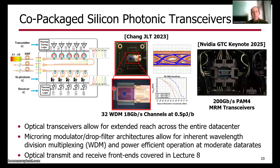Finally, we're going to cover optical transceivers that allow for extended reach across the entire data center. There is currently a lot of excitement around co-packaged silicon photonic transceivers based on micro-ring modulators and drop filters that allow for inherent wavelength division multiplexing and power-efficient operation at moderate data rates, such as this 32-channel WDM implementation where each channel operates at 18 gigabits per second with a front-end power of 0.5 picojoules per bit. NVIDIA recently announced systems shipping this year with 200 gigabit per second PAM4 transceivers based on micro-ring modulator technology. Optical transmit and receive front ends will be covered in lecture eight.